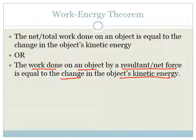So we either say the net work done — net or total, you don't use both words — done on an object is equal to the change in the object's kinetic energy. Or we can say the work done on an object by resultant force is equal to the change in the object's kinetic energy.